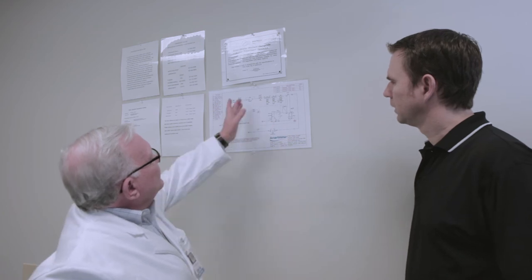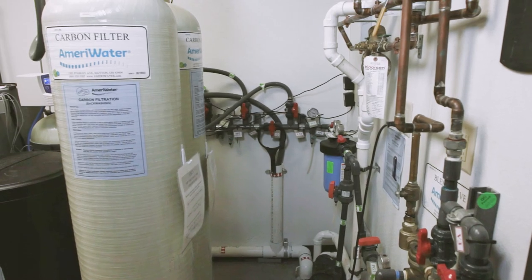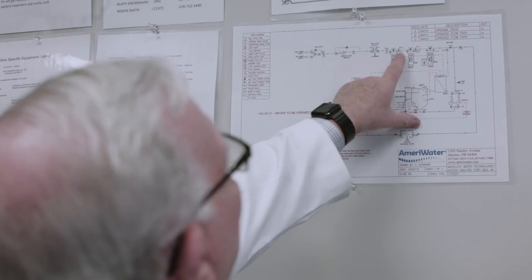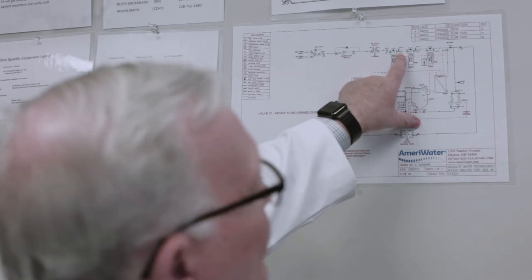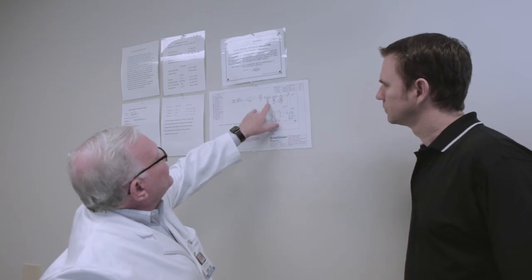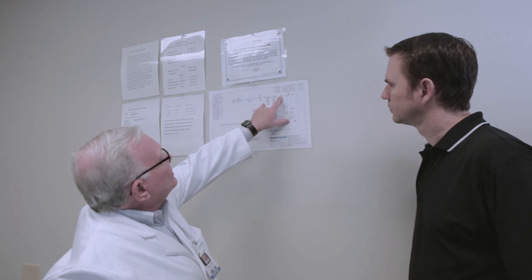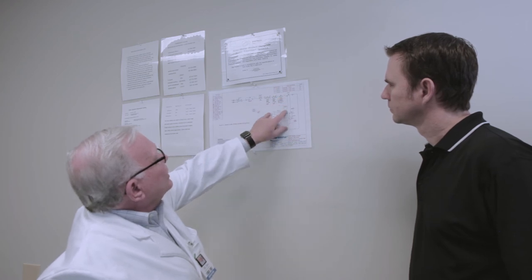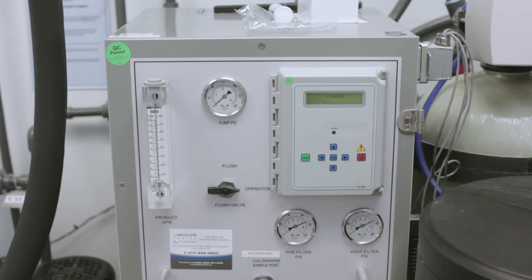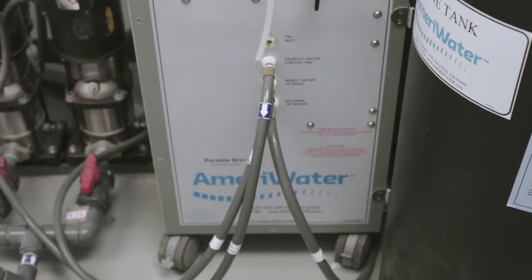After the sediment filter we go to the carbon filters, and you can see sample port number two, which is where we'll do our total chlorine test. After the carbon filters we have the water softener. In this case the sample port for the water softener is actually on the front of the RO system, which is easy to get to, and we have it labeled there.